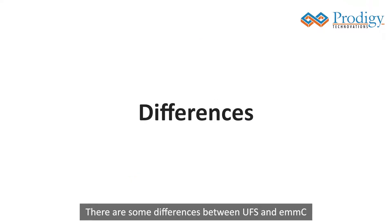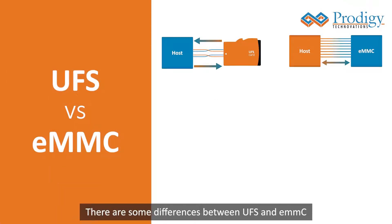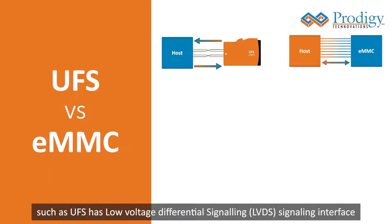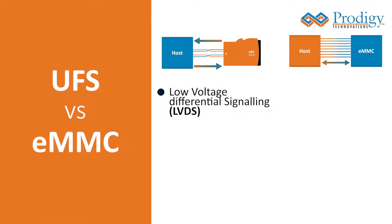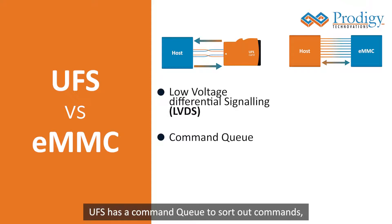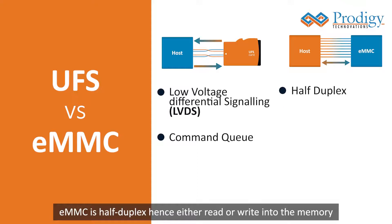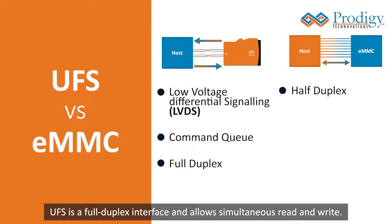There are some differences between UFS and EMMC. UFS has low voltage differential signaling, LVDS, as its signaling interface. UFS has a command queue to sort out commands, allowing multiple commands to be carried out. EMMC is half duplex, meaning it can either read or write into memory, whereas UFS is a full duplex interface and allows simultaneous read and write.